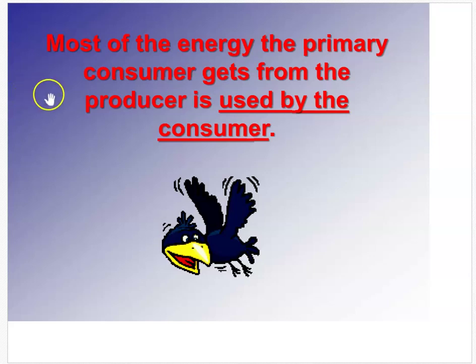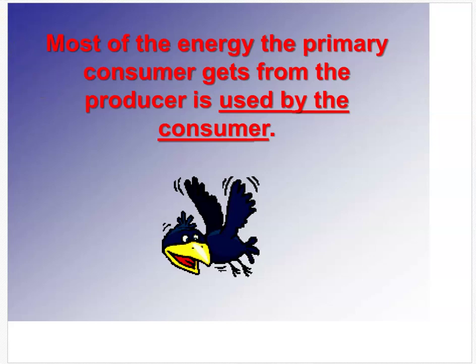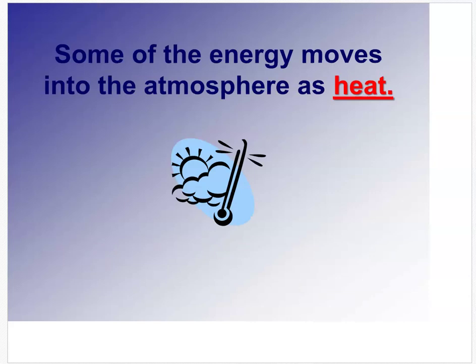Most of the energy the primary consumer gets from the producer is used by the consumer — about 90% is kept and used for everyday life and survival. Some of the energy moves into the atmosphere as heat, and energy also keeps our body temperature up.